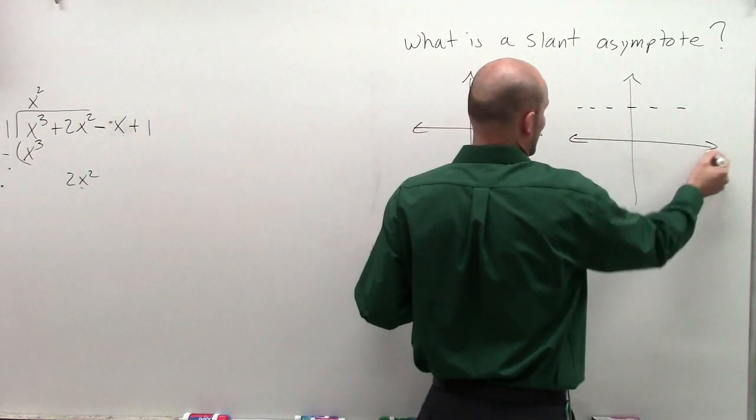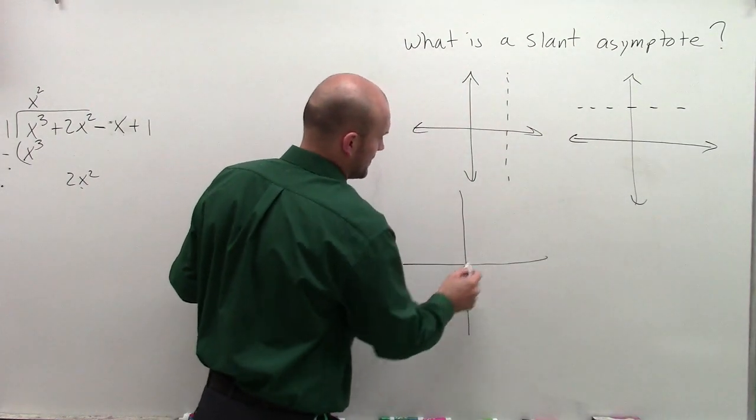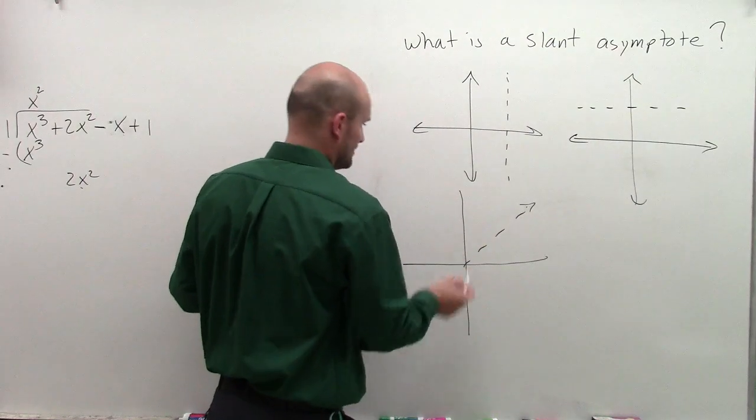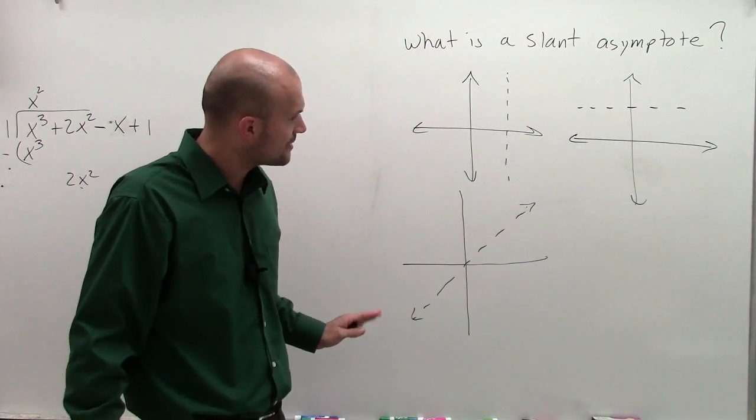A slant is exactly what you think of it - it's going to be a line that our function is going to approach.